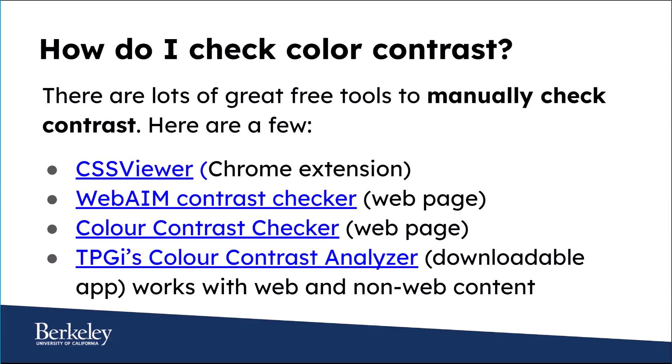So you might be wondering how to check color contrast. There are some great free tools to help you manually check color contrast ratios. Here are four. The CSS viewer can tell you the actual hex value of text and background colors on web pages — this is the most accurate way to determine the color of text. The last three allow you to use eyedropper tools to select colors, and then the tool tries to identify the hex values. These aren't 100% accurate, but they are usually close and work better on larger, thicker text. The Web AIM Contrast Checker and Color Contrast Checker are web-based tools. TPGi's Color Contrast Analyzer is a free downloadable app that works with both web and non-web content, and you can download it even if you don't have admin rights.